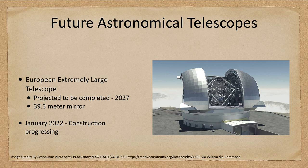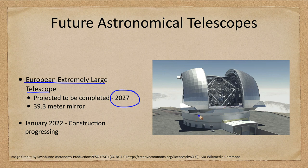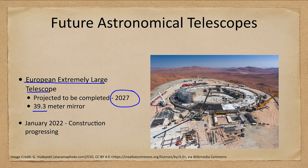Let's look a little bit about the future and what's coming. One telescope being worked on is the European Extremely Large Telescope, projected to be completed in 2027. This conception drawing shows a 39.3-meter mirror — much larger than any of the telescopes we've talked about. Progress is ongoing, and as of 2022 the setup has begun. Eventually it will be the largest telescope and will represent a big increase in our understanding by being able to see far fainter objects.